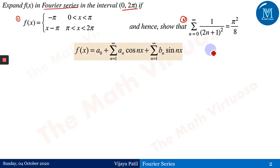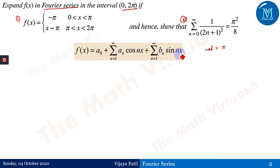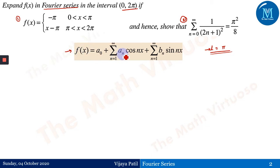As the interval is 0 to 2π, the value of l is equal to π. Please follow the previous parts to understand where l = π comes from, as prior knowledge of each session is required. The Fourier series expansion for this function is: f(x) = a₀ + summation of aₙ cos(nx) + summation of bₙ sin(nx), where a₀ = (1/2π) ∫₀²π f(x) dx.